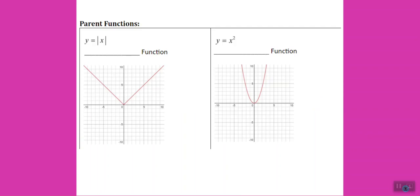First let's look at our parent functions. The function with lines around the x is the absolute value function. Something that might help you is that the absolute value function makes a V shape.